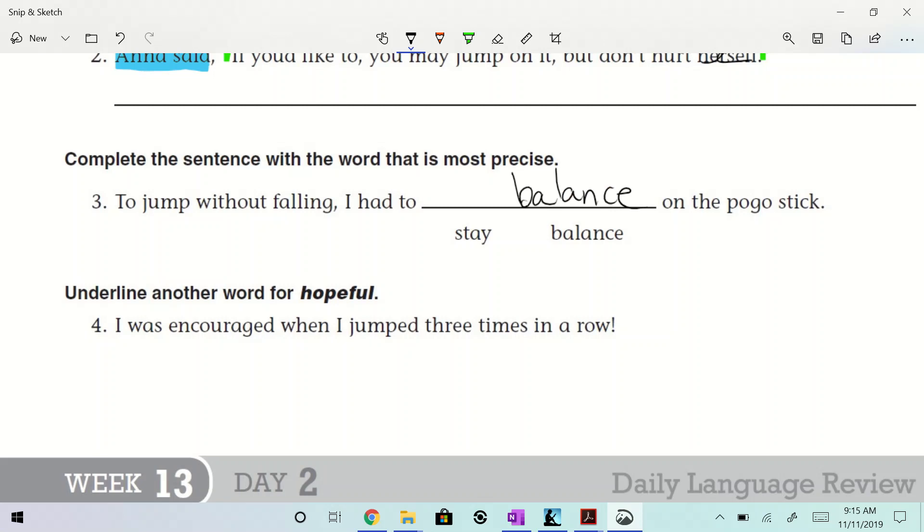Alright. Underline another word for hopeful. So, what do we need? Another word would be a what? Another word for hopeful would be synonym, right? I was encouraged when I jumped three times in a row. I was encouraged when I jumped three times in a row. What word is another word for hopeful? Encouraged. There you go.